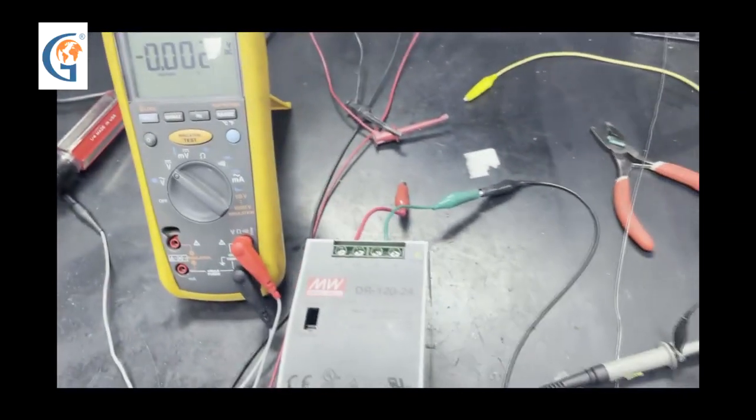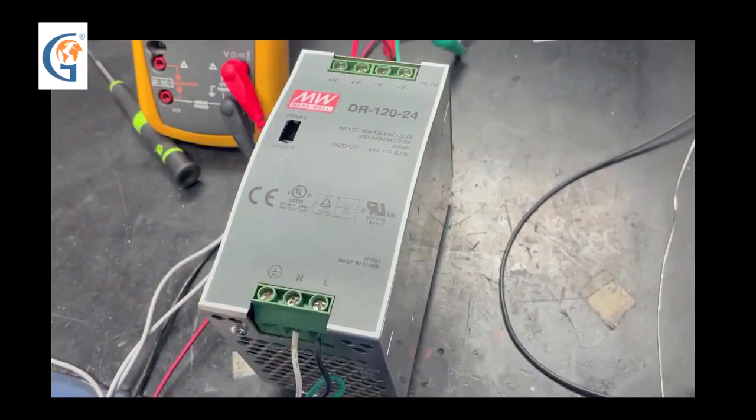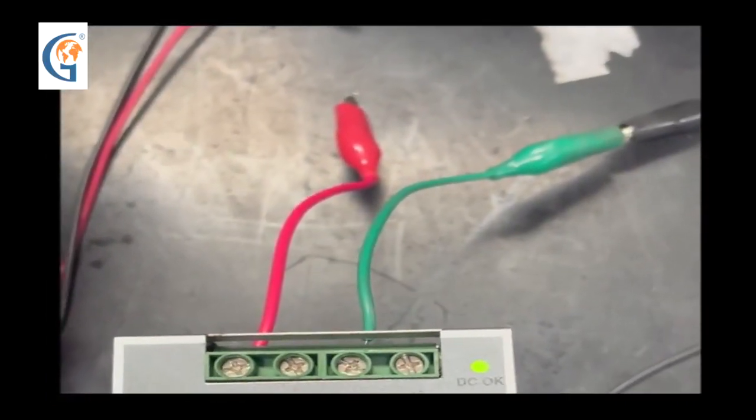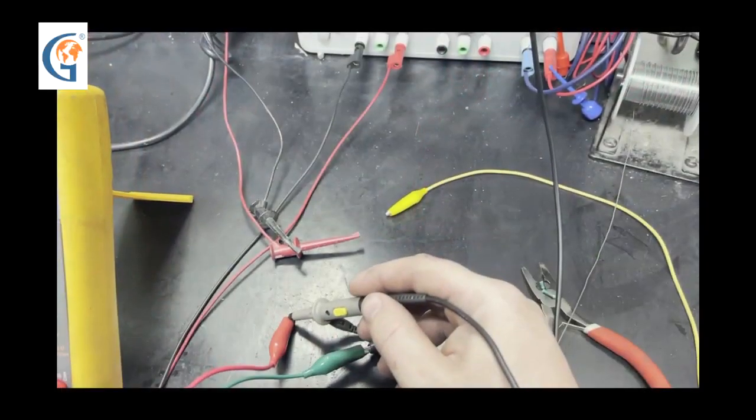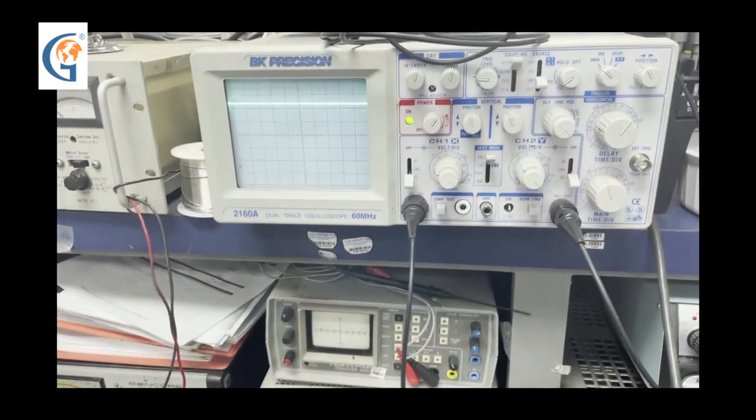However, we want to make sure it's good under a full load. Output leads and ground are hooked up. We'll use the reading on the oscilloscope to make sure we have a clean 24 volts.